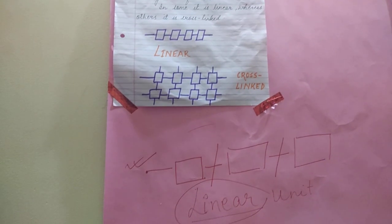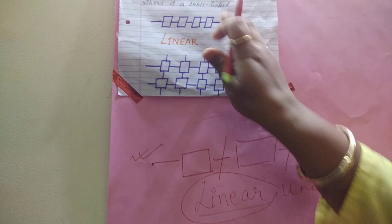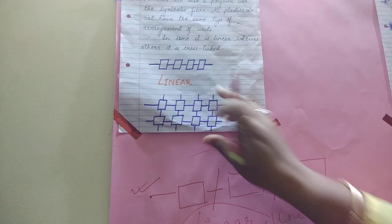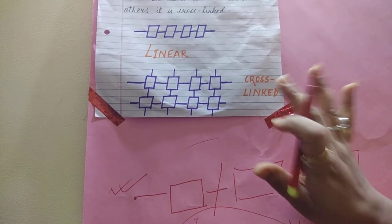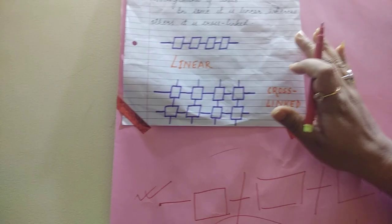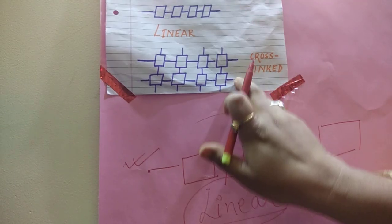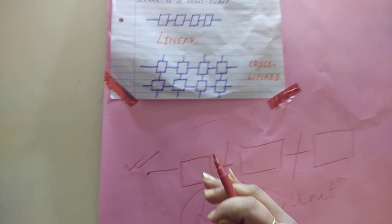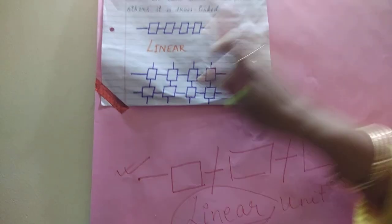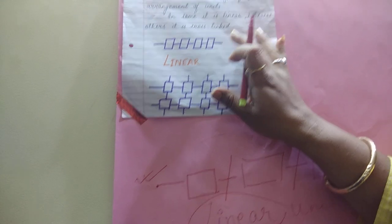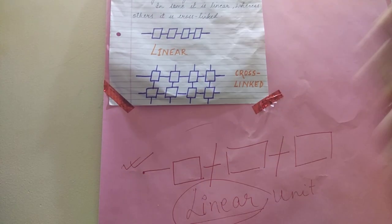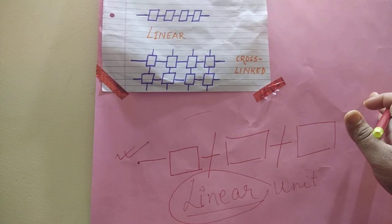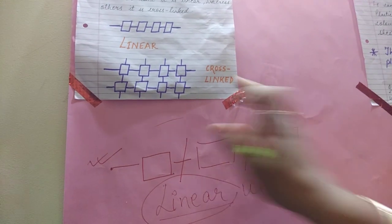Linear means simply — you can deform it, break it, and reshape it. This is known as linear plastics. Now my second type of arrangement is cross-linked. I'm not talking about the type right now — just the arrangement. The type of plastic it corresponds to will be easier to understand when we study types of plastics.